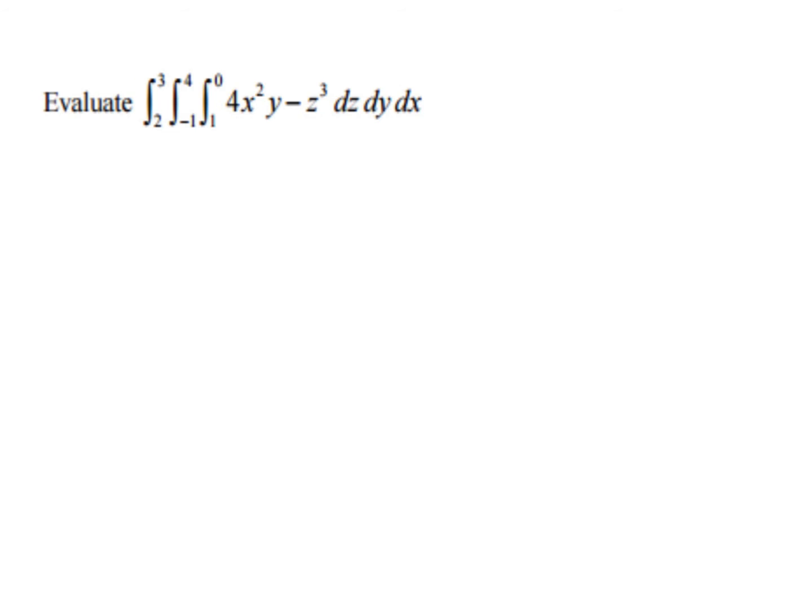So let's just kind of quickly go through the nuts and bolts here of this. Let's start with respect to z. So we're going to have 4x²yz. Evaluate at 0 and 1. If I plug in 0, I get 0. If I plug in 1 for z, I get 4x²y minus 1/4. And that minus out front, I'm going to end up with 1/4. I like to have the positive term first.